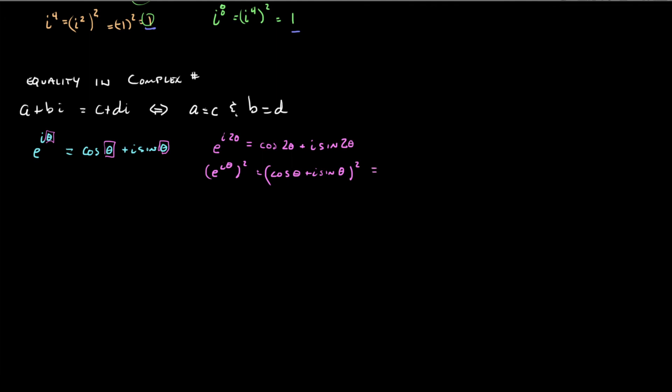When I do, one easy way to do this, by the way, you square the first, so it's cosine squared theta. You square the second. Now, remember, that's i squared as well, so it's going to be negative 1 times sine squared theta. And then you multiply the stuff inside, i sine theta, cosine theta, and you double it. So, it's going to be plus 2 i cosine theta sine theta.